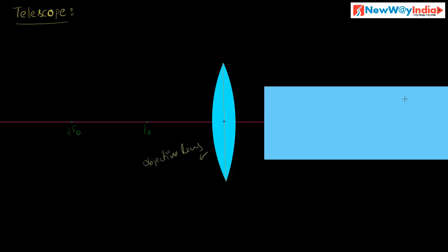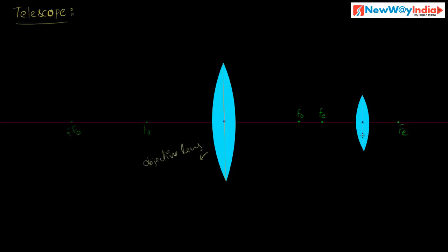The smaller tube has another convex lens which has a lesser focal length. This is called the eye lens. So in a telescope, the objective lens has a larger focal length and the eye lens has a lesser focal length. This is different from the compound microscope. These two metallic tubes can easily slide into one another.